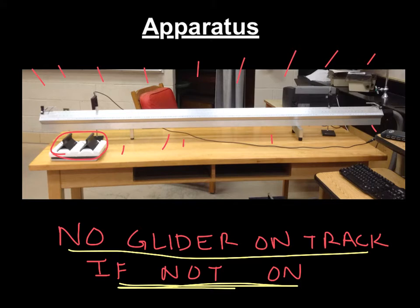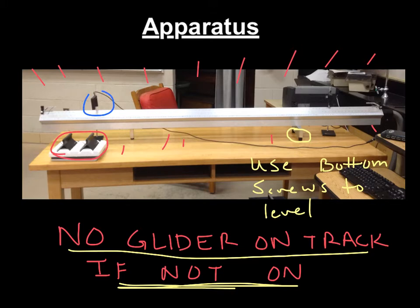Second thing I want you to notice, if you look right down here, there are two screws. These level the track. If it's not level, you're not going to get the right data, so make sure that you level this using the bottom screws. And then the final thing, these right here, these are your photo gates. They collect the data. The glider runs through, hits it, does whatever, and this is what records your data. Please make sure that they're high enough that the glider does not hit it, because you don't want that to happen. It's very sad.